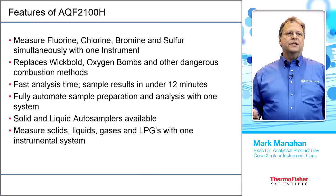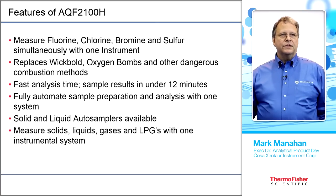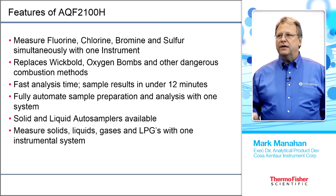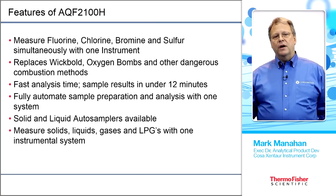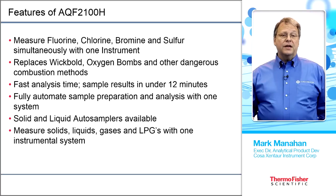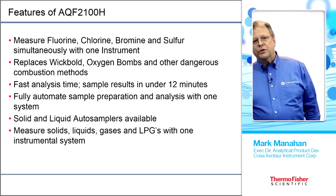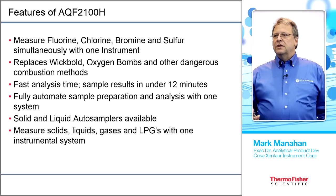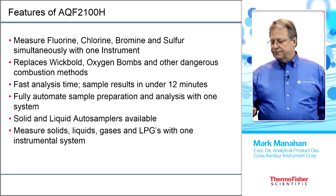The features of combustion IC include automating the measurement of chlorine, fluorine, bromine, iodide, and sulfur in a single analysis, or just halogens in a general analysis. It replaces dangerous Wickbold combustion methods. It's fast — about 12 minutes per sample once the first combustion is finished. It is a fully automated system capable of handling solids, liquids, gases, and LPG with one system.